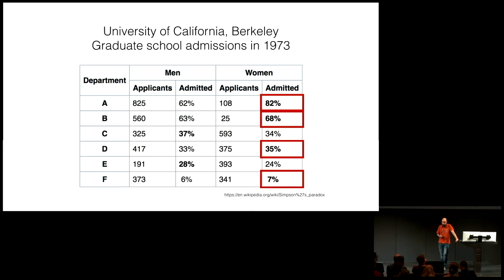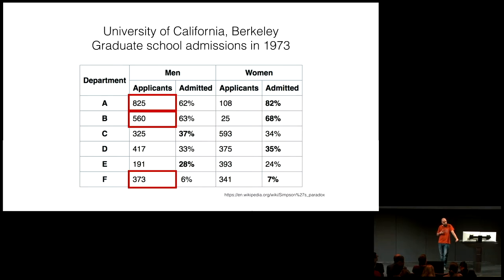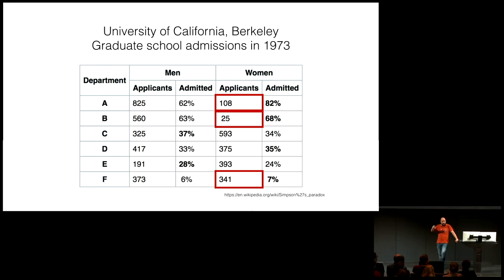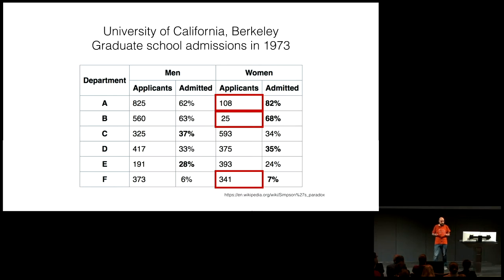Looking at the proportion of admissions in the women's column, notice how for many departments, this proportion is much higher compared to the men's column. The thing is, when you look at the absolute numbers of applications, you see how men apply in big numbers for some departments — and in those departments, they have a lower proportion of admissions. On the other side, women apply in low numbers when they have a high proportion of admission. Maybe women apply in big numbers for departments that are more challenging, or men apply in big numbers for departments that are easier to get into. Essentially, if you have any kind of agenda, you can show one part of the story or the other — and all these numbers are correct, they're just telling a different story.